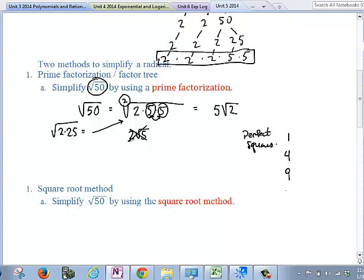then we have 4, then 3 squared would give you 9, 4 squared would give you 16, 5 squared would give you 25, 6 squared would give you 36, 7 squared would give you 49.